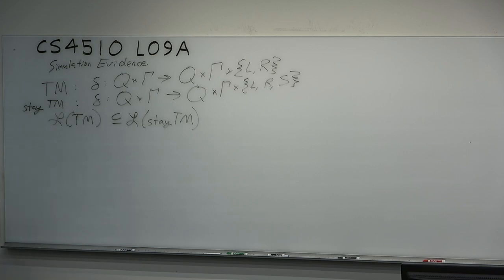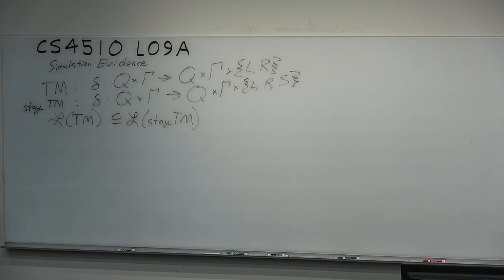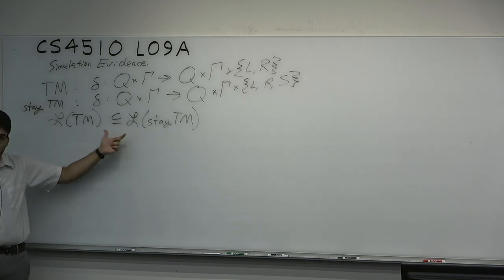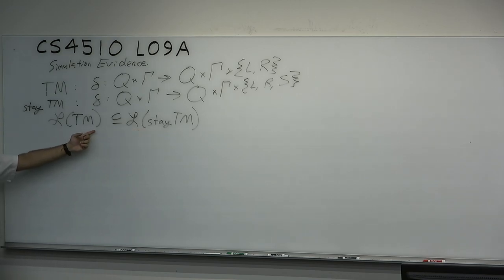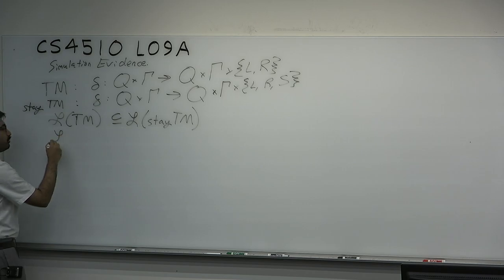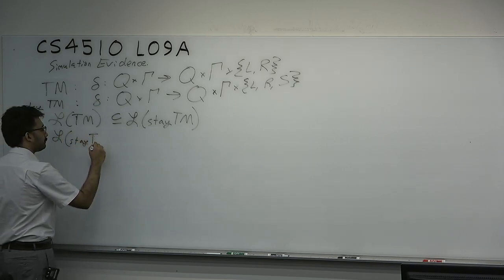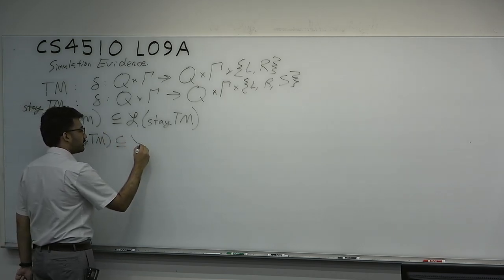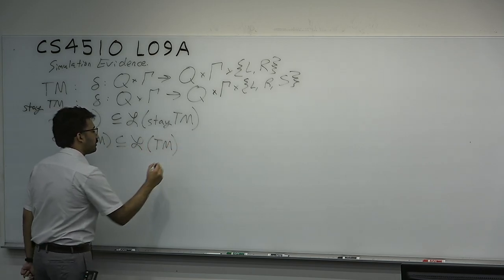We say a Turing machine is allowed to decide or recognize a language, or compute some function. For now let's just think about it saying yes or no — decidable or recognizable languages. So this Turing machine says yes or no, and the Stay TM also says yes or no. It might appear that the Stay TM is more powerful. We're going to prove that even though this is a generalization, every language recognizable by a Stay TM is also recognizable by a normal Turing machine without the stay operation.